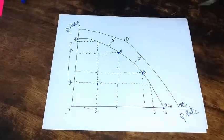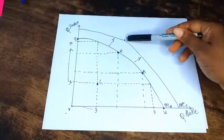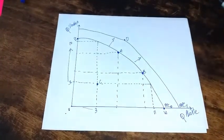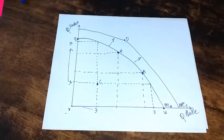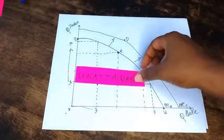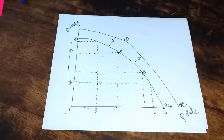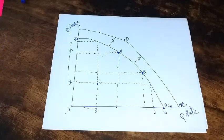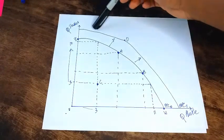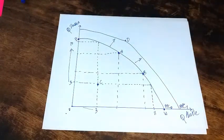A point such as D, which is outside of the original PPC or any point further out, that is considered to be unattainable. However, with time and with an increase in technology and increase in resources, it is possible for your PPC curve to shift rightwards so that a point such as D can now be attained.